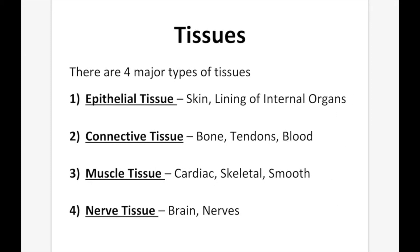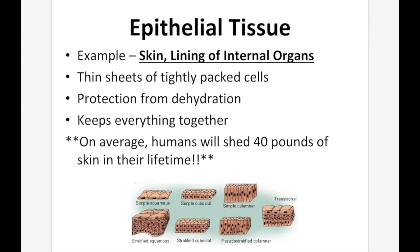Connective tissue includes bones, tendons, and blood. Muscle tissue includes cardiac, skeletal, and smooth. Nerve tissue includes things like brain and nerves. First up, epithelial tissue — for example, skin and lining of internal organs. They are thin sheets of tightly packed cells. They protect you from dehydration and keep everything together, essentially creating a barrier that prevents things from coming in and prevents things from going out. On average, humans will shed 40 pounds of skin in their lifetime.